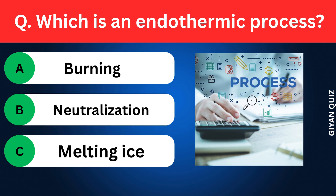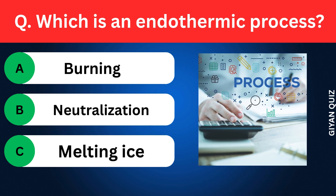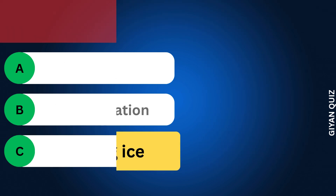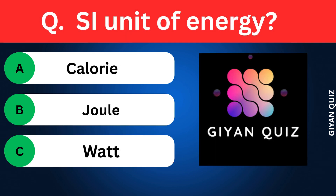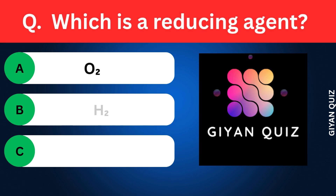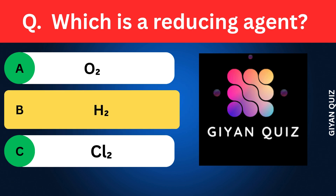Which is an endothermic process? Options: Neutralization, Melting ice. Correct answer: melting ice. SI unit of energy? Options: Calorie, Joule, Watt. Correct answer: joule. Which is a reducing agent? Options: Oxygen, Hydrogen, Chlorine. Correct answer: hydrogen.